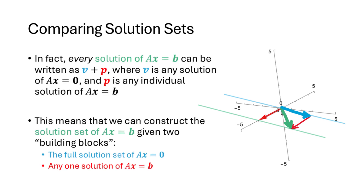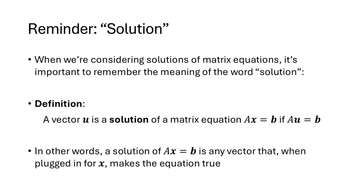Another way to think of this is that we can construct the solution set of Ax equals b using two pieces. The first piece is the full solution set of Ax equals 0, which we learned about in the previous lecture, and the second piece is any one particular solution of Ax equals b. We're using the word solution a lot, so it's worth making sure we understand the definition: a vector u is a solution of Ax equals b if Au equals b — in other words, if we replace x with u, the left-hand side equals the right-hand side.